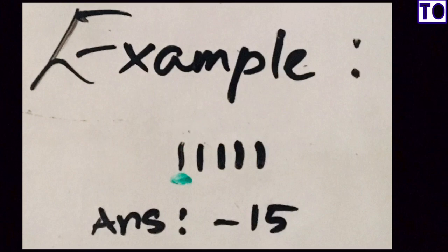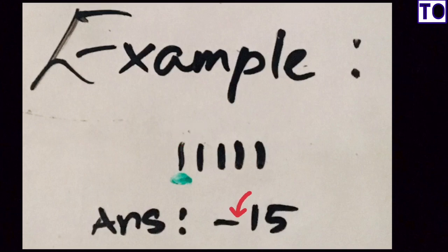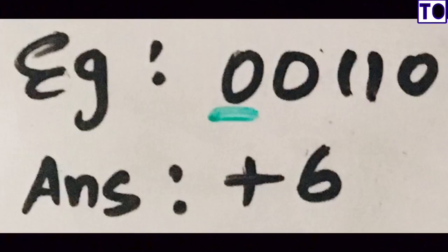You have to write the binary number. First, you have minus 1, you have minus 4, and you have 15. The binary value of 15 gives the answer minus 15. Now let's take an example: 0, 0, 1, 1, 0. This is a binary representation.